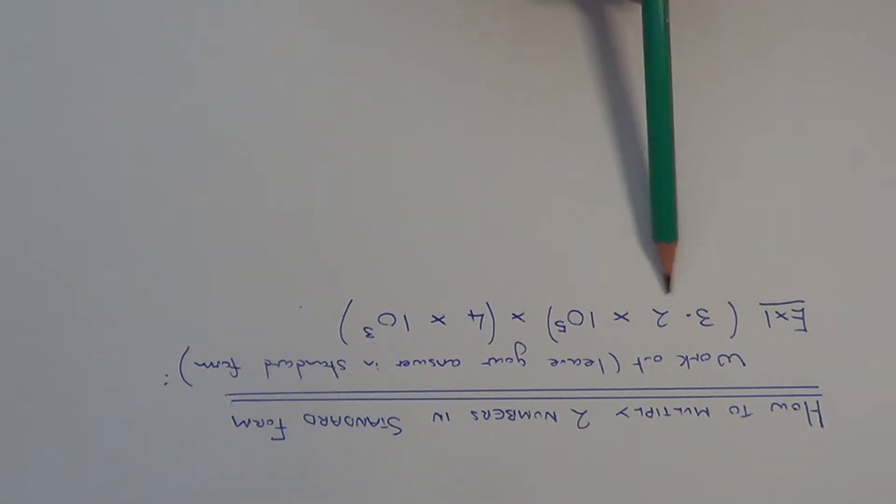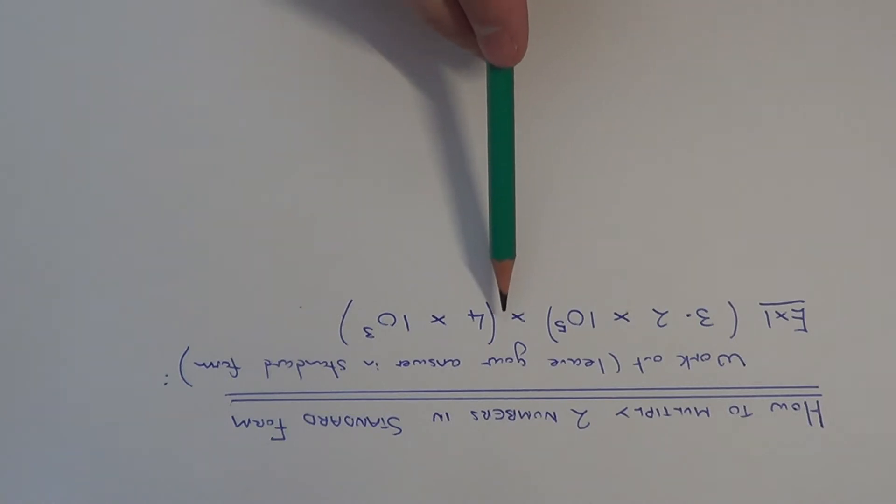So let's look at example 1. We've got 3.2 times 10 to the 5 multiplied by 4 times 10 to the 3.